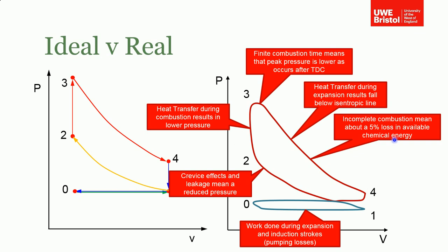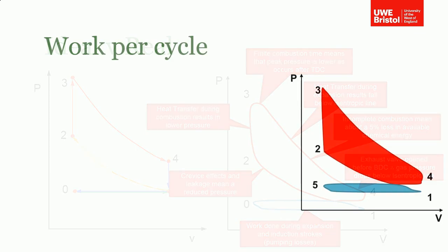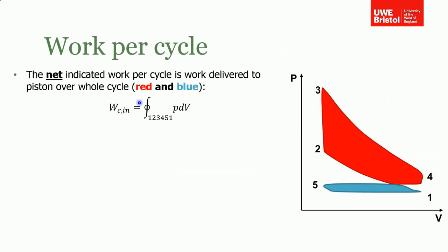Rather than having the isochoric heat rejection, the exhaust valves need to be opened before bottom dead center to allow time for the exhaust gases to escape prior to inducting the new charge. So again this pulls it back below the isentropic line as well. You can see all these things that are going on, all the challenges that we have, that mean we can't achieve what we want in theory.